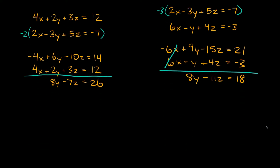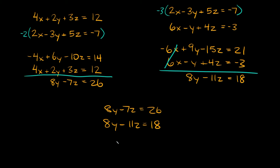So that's the big first messy step — just trying to get rid of one of the variables using all three equations. Now we're left with just two equations: 8y minus 7z equals 26, and 8y minus 11z equals 18. This is a lot easier because it's just two equations and two unknowns. I'm going to keep using the elimination method since we have 8y in both equations, so if I make one of them negative I can eliminate y.